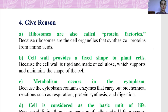Cell wall provides a fixed shape to the plant cell because the cell wall is rigid and made up of cellulose which supports and maintains the shape of the cell. Metabolism occurs in the cytoplasm because the cytoplasm contains enzymes that carry out biochemical reactions such as respiration, protein synthesis, and digestion.